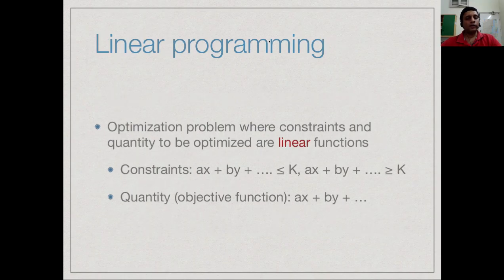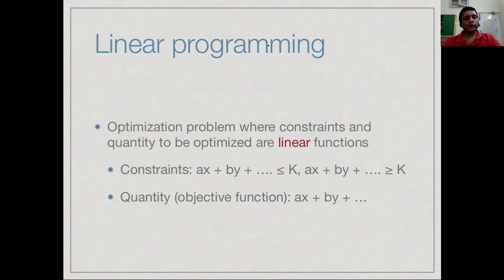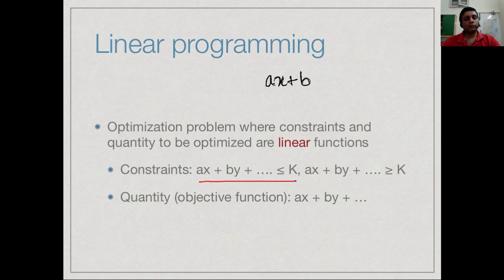We can look at a more general formulation of such constrained optimization problems in the framework of what is called linear programming. In linear programming we are given some variables, some quantities that we want to calculate, and then there are some linear functions that constrain these quantities. A linear function of a variable x is something of the form ax plus b - it has no x squared or x cubed term, it is all linear. In general, if we have multiple variables x, y, z, then we could have a constraint of the form ax plus by plus something is less than or equal to some constant, or greater than or equal to some constant.